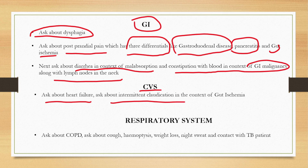Then ask about serious problems like heart failure, which leads to cardiac anorexia. Ask about intermittent claudication in the context of gut ischemia — if the patient is having intermittent claudication, they may be having gut ischemia.